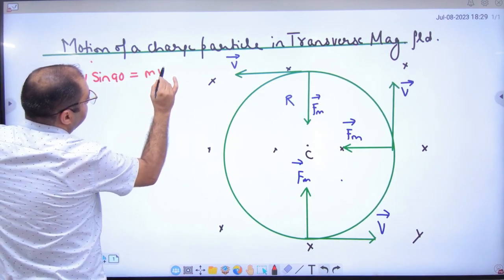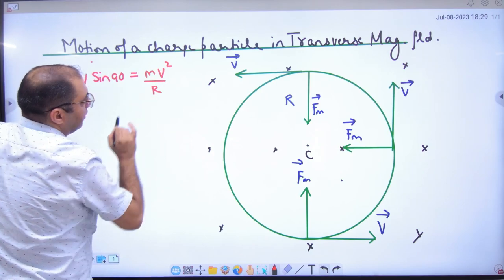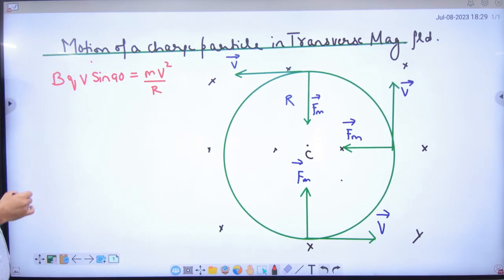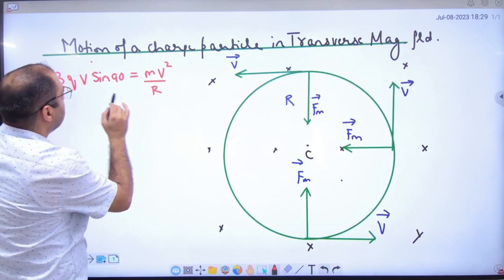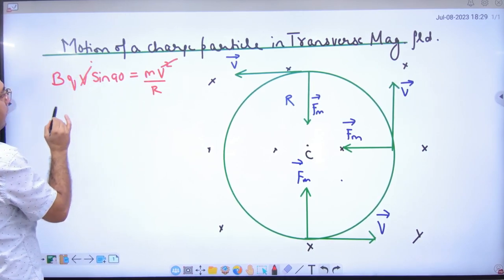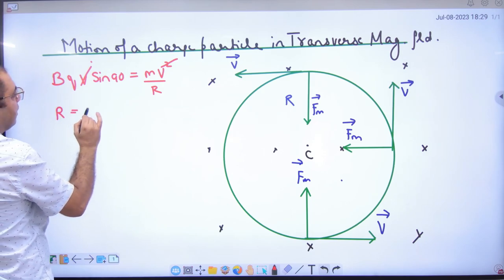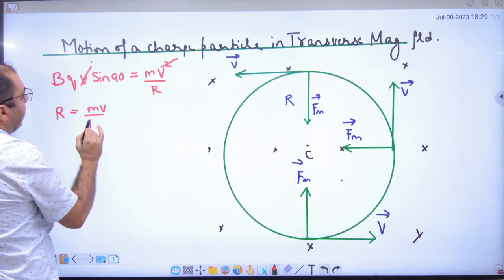Is equal to MV square by R. So BQV sin 90 is MV square by R. So V cancel. What will R value come from? MV divided by BQ.